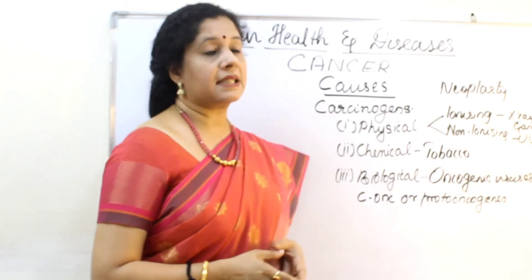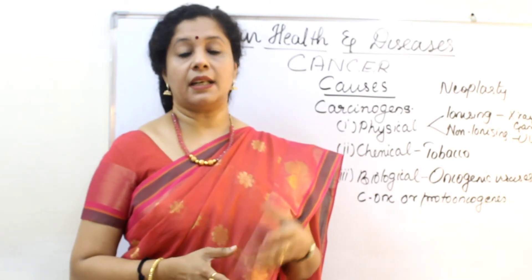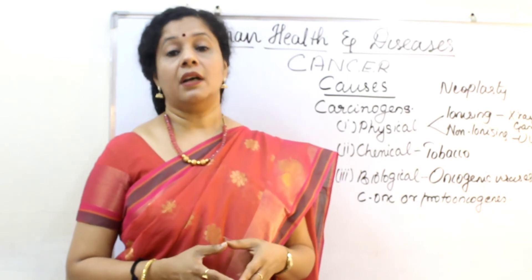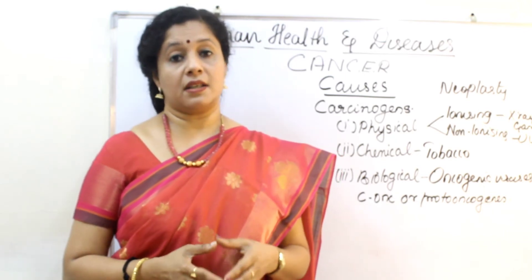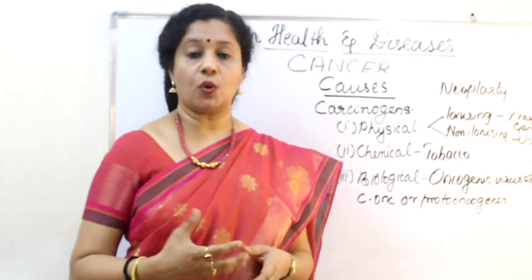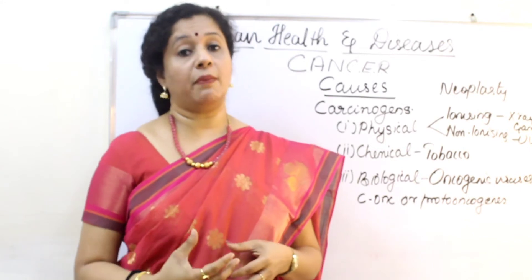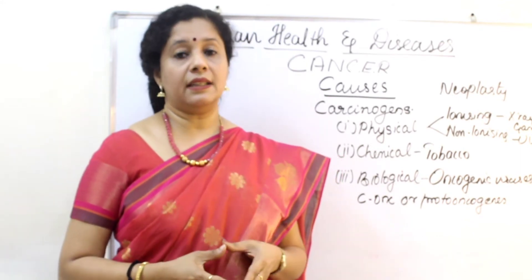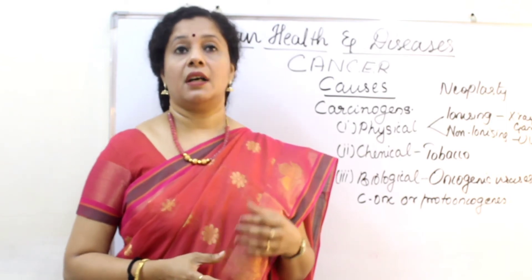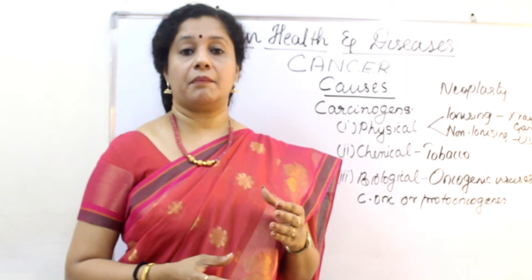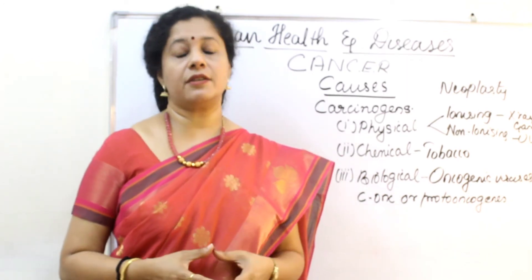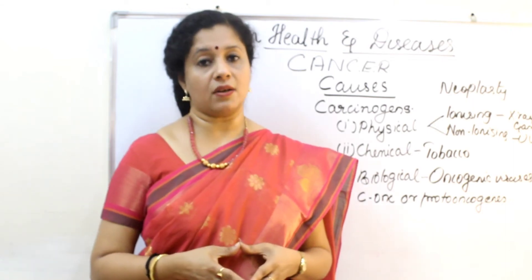The second category is chemical carcinogens. The number one is tobacco, which contains chemicals that can trigger lung cancer — a major threat. Apart from that, tobacco users can also get urinary bladder cancer and throat cancer, and those chewing tobacco get oral cancer. Not only tobacco, but flavouring agents, artificial colouring agents, preservatives, synthetic food, processed food, and also certain hormonal imbalances in the body can cause cancer.